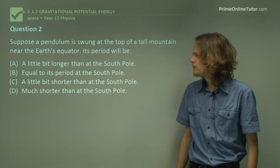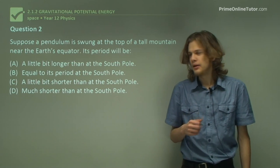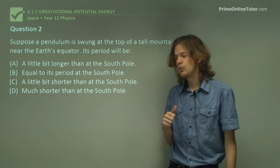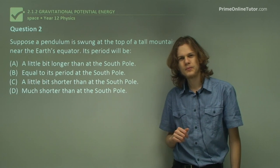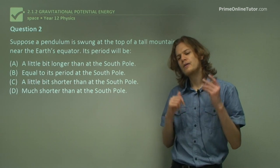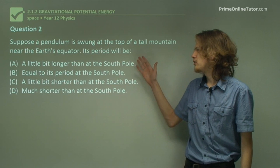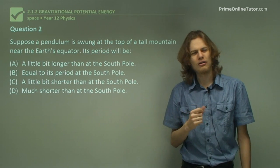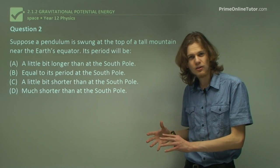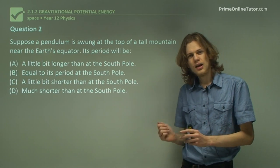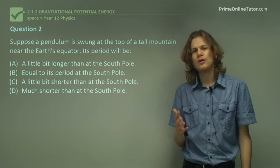Question two. Suppose a pendulum has swung at the top of a tall mountain near the Earth's equator. Its period will be either longer, equal, or shorter than its period at the South Pole, or much shorter than at the South Pole. The question here is how does the gravitational acceleration change based on the fact that you're at the equator at the top of a mountain? Remember that the gravitational acceleration is inversely proportional to the radius of the planet, and if the radius changes — such as if you're at the equator — that will change the gravitational acceleration.